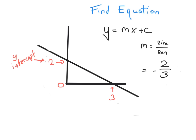Remember also that c stands for the y-intercept, which in this case would be 2, where the line cuts across the y-axis. So we can say that c is equal to 2. Now that we know both m and c, we can write out the full equation. As m equals minus 2 over 3 and c equals 2, the equation is y equals minus 2 over 3x plus 2.